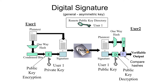The receiver gets that document with the appended signature, removes the appended signature, and uses the same one-way hash on the document to create condensed bits. They then compare those condensed bits with what they get after decrypting the signature with the sender's public key. If the decrypted value matches what they computed, the document has not been changed. If the bits are different, then either the document has been changed along the way or it was not created by the person who claims it was.